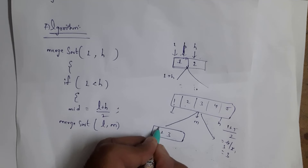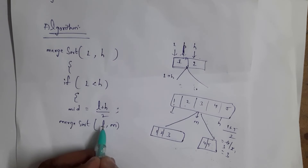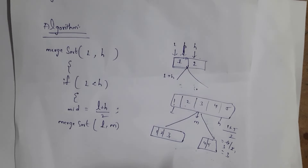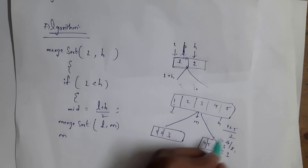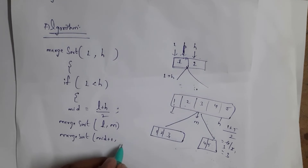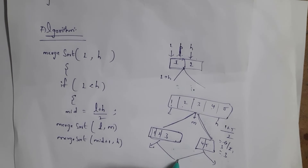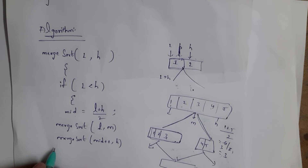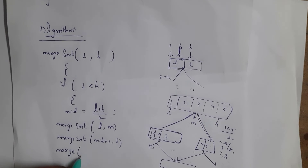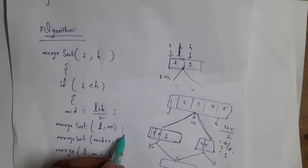After finding the middle, we apply MergeSort(lower, middle) to the first half containing the lower and middle elements, and MergeSort(middle+1, higher) to the second half. After performing merge sort on both halves, we combine them by calling Merge(lower, middle, higher).